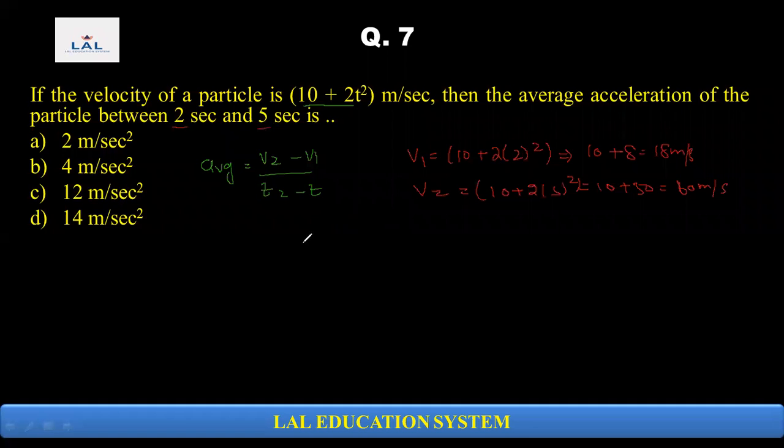What do we do? Find out average acceleration. Average acceleration is v2, 60 minus 18, divided by t2 minus t1, which is equal to 5 minus 2. If we further solve here, 42 divided by 3 is equal to 14 meter per second square. Average acceleration.